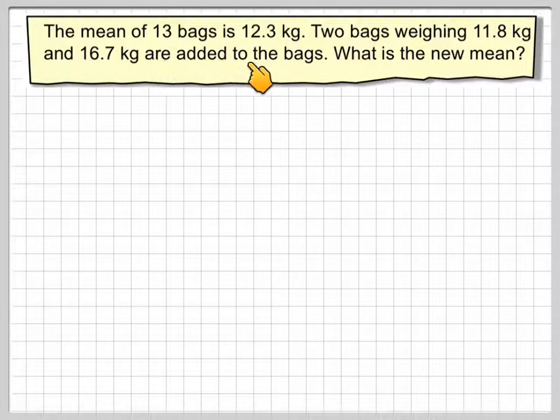The mean of 13 bags is 12.3 kilograms. Two bags weighing 11.8 kilograms and 16.7 kilograms are added to the bags. What is the new mean?